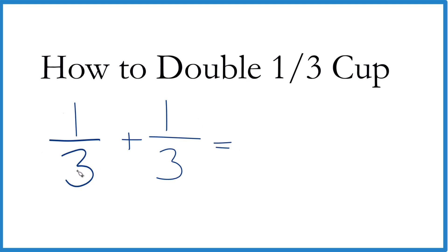And then when we add fractions, if the denominator is the same, we can just keep this the same. And we have one plus one is two. We keep the denominator the same. We get two-thirds.